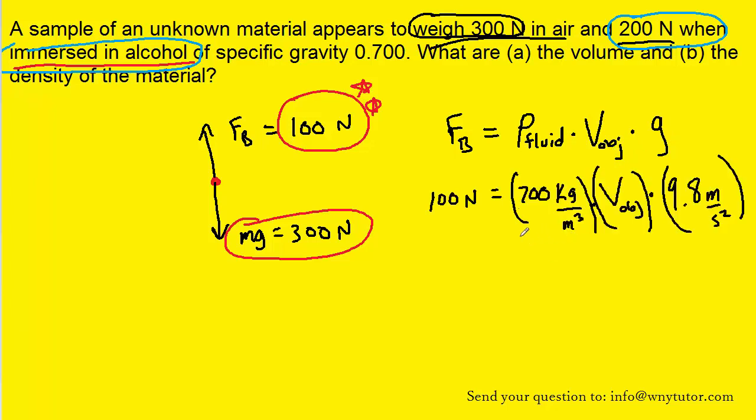One thing that deserves explanation is where we get the density of the fluid from. They didn't give it to us directly—they told us the specific gravity is 0.7. Specific gravity equals the ratio of the density of the fluid to the density of water. The density of water is known to be 1000 kg per meter cubed.